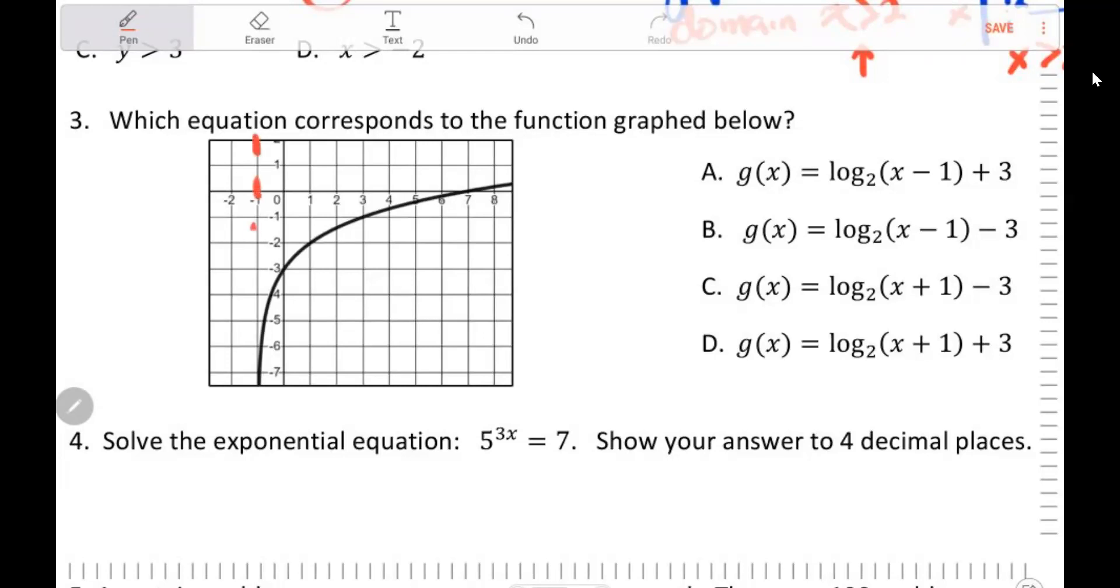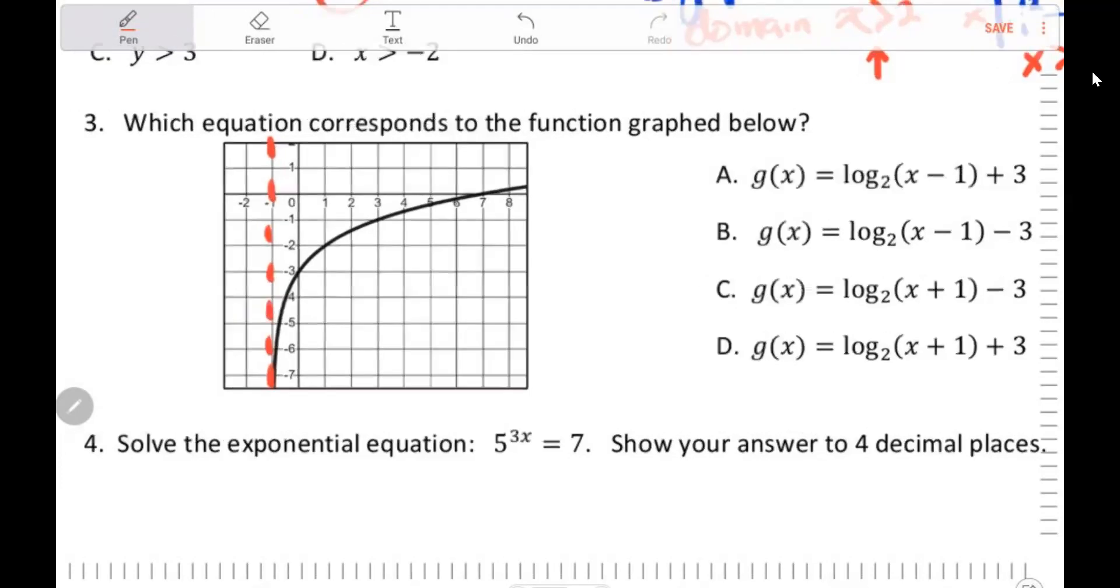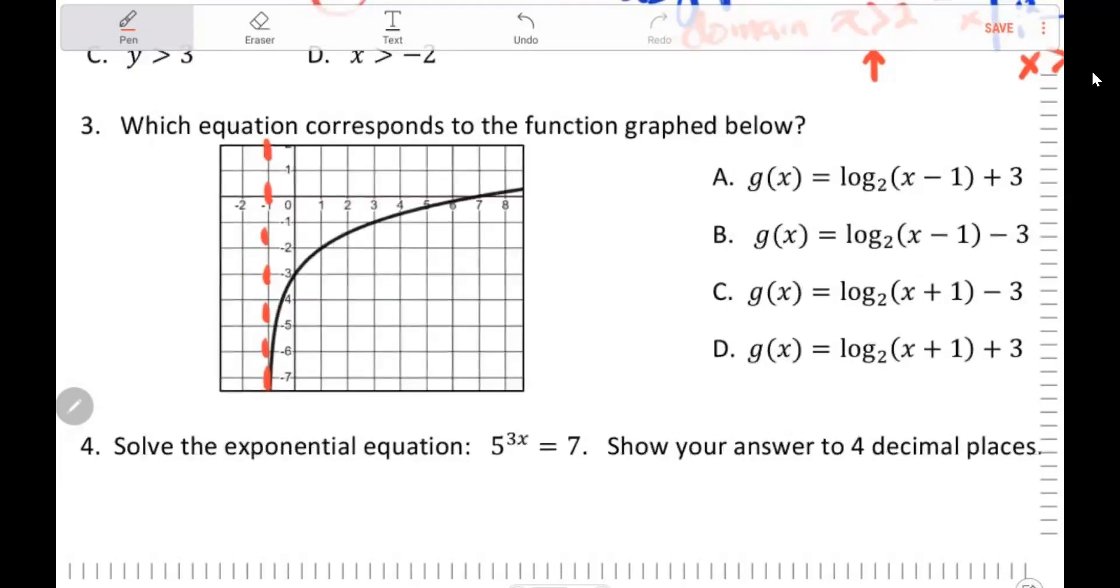So, notice that this is the line where the graph turns and goes south. And that is at x equals negative 1. So our function is going to look like x plus 1 inside the parentheses. That's called the argument.